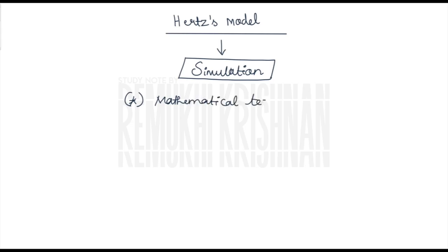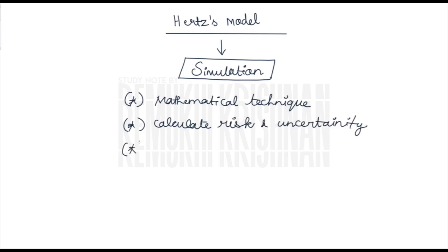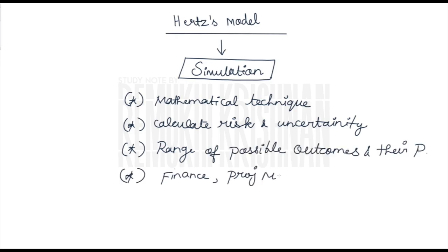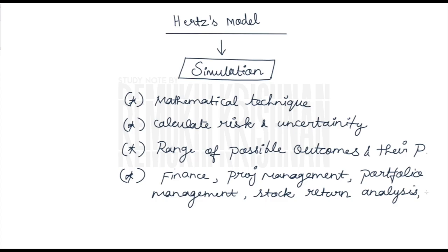Simulation is a mathematical technique that helps us calculate risk and uncertainty by providing a range of possible outcomes and their probabilities. When it comes to capital budgeting, simulation can be used because it applies across a wide range of industries and projects — including finance, project management, and portfolio management. Instead of conducting real-time experiments, a model is created. When a project involves lots of resources, time, and value, simulation can be used as an alternative to understand possibilities and avoid risk in the pre-production stage.